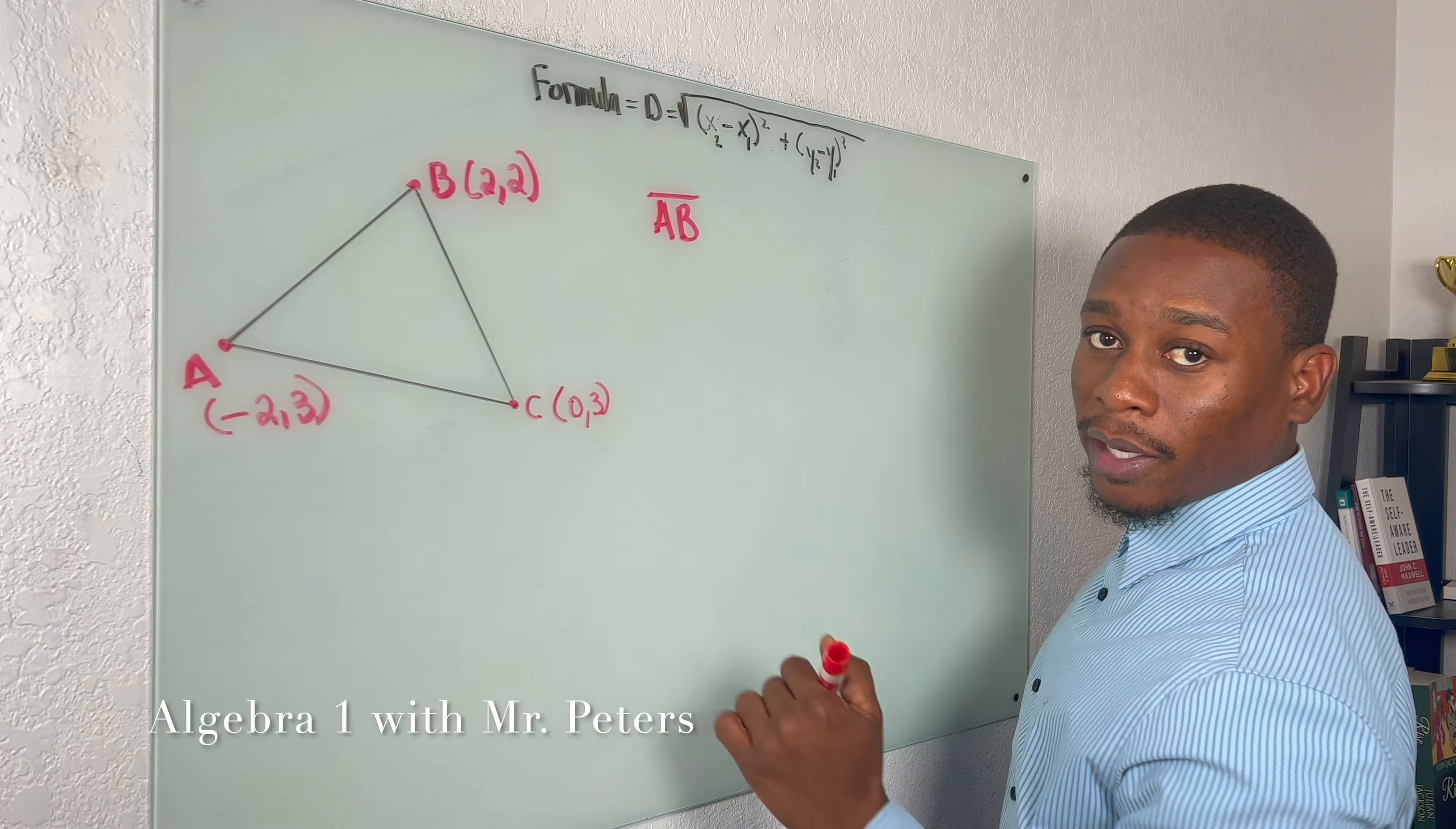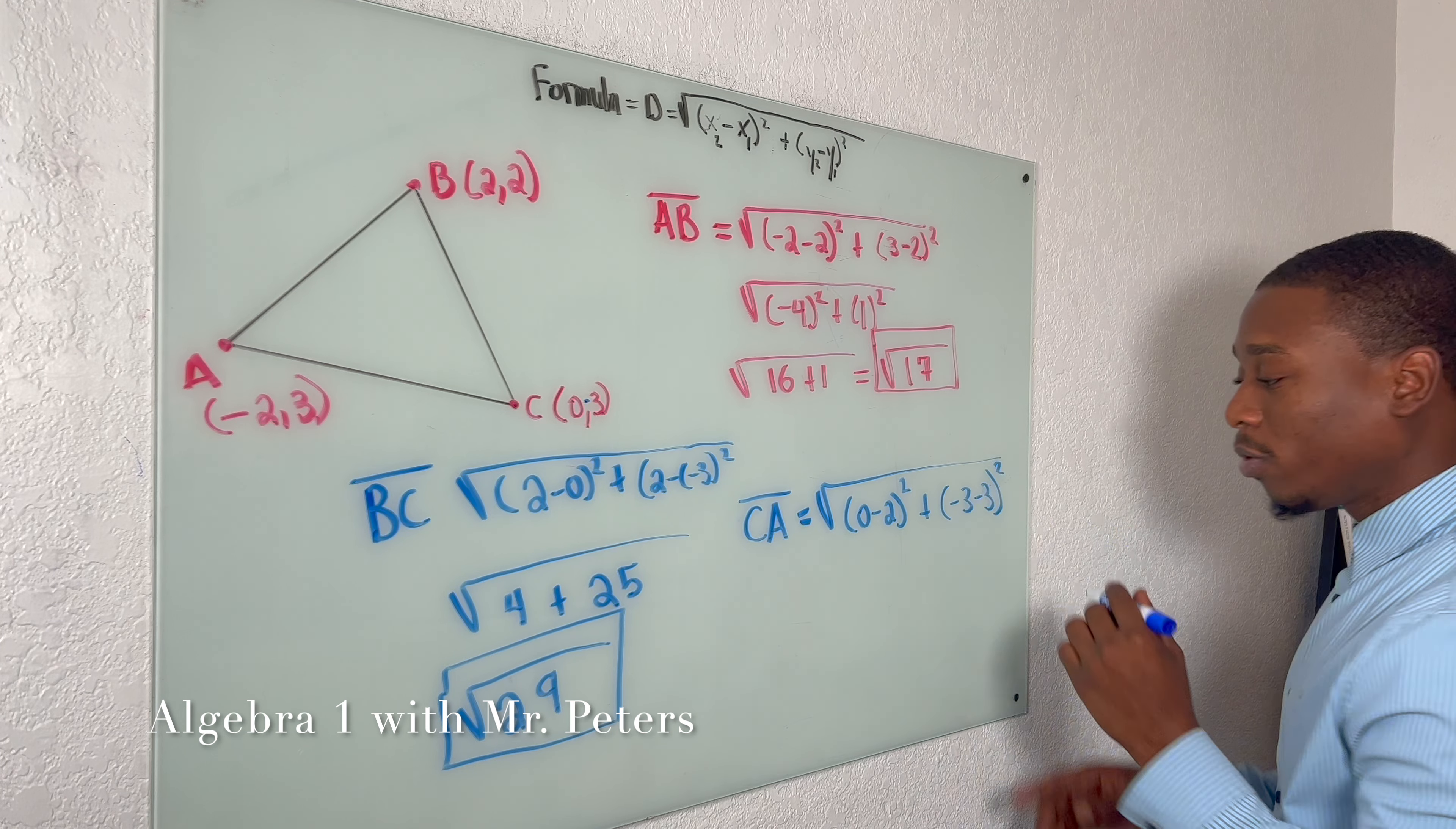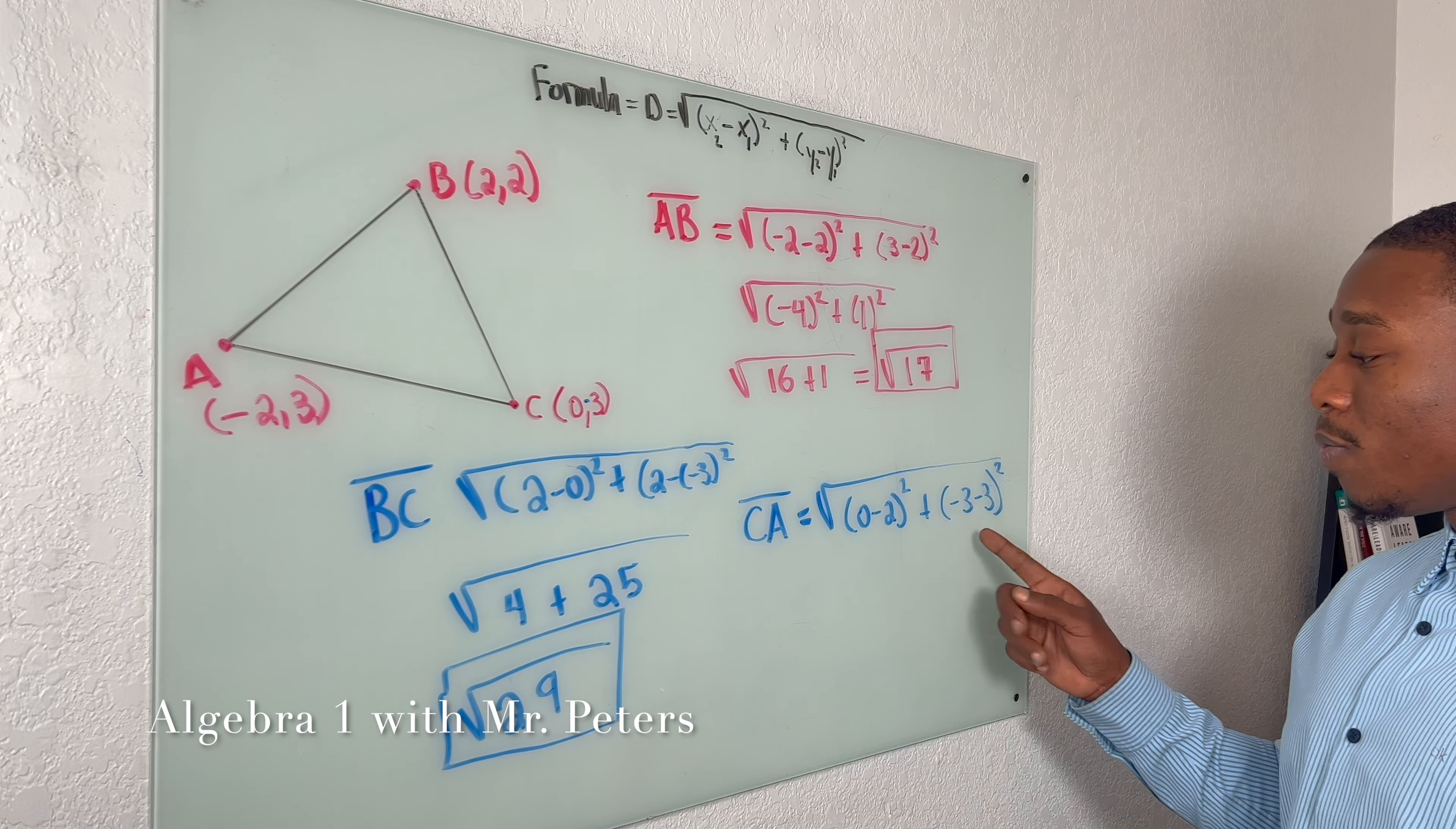Now we're going to go ahead and find C to A, and it's going to be the same exact steps. I'm sorry that it's the same steps, but just be mindful that you input everything correctly. So we go to side C to A, and what we're going to have is (0 - 2)² + (-3 - 3)². So on this part right here, just remember that both of these signs are the same, so this is going to be -6.